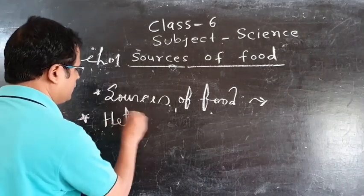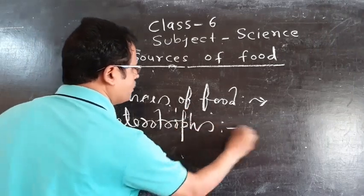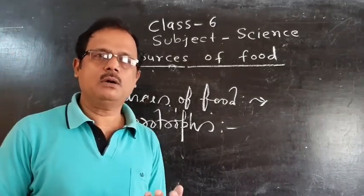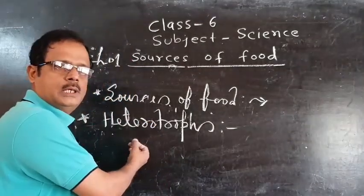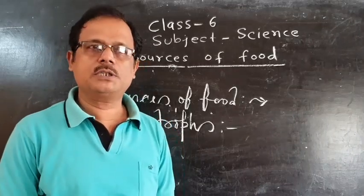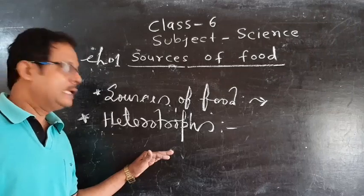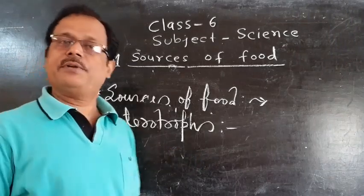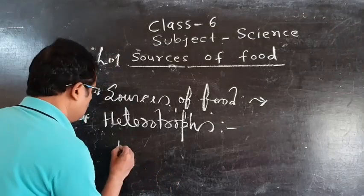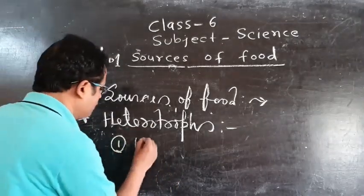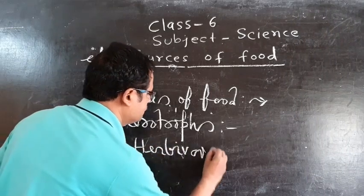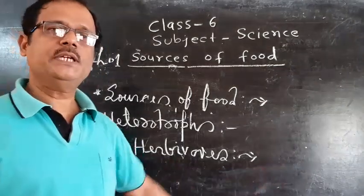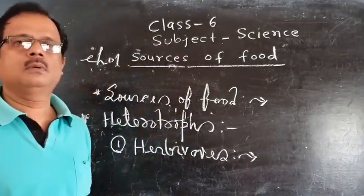The next topic is heterotrophs. Heterotrophs are living organisms that have no capacity to prepare their own food, so they depend on others for their food. On the basis of taking food, heterotrophs are categorized into different categories. First are herbivores — all the animals that feed only on grass and plants are called herbivores.